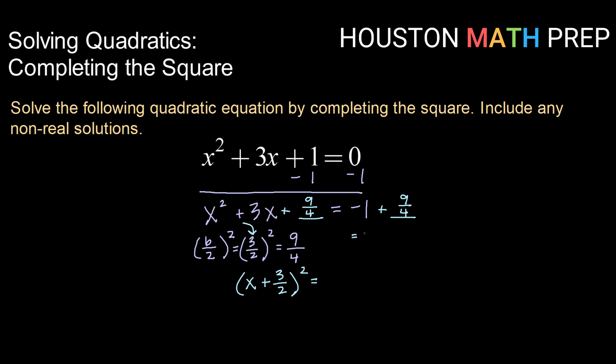And on the left hand side we want to combine. So if I get a common denominator there that would be negative 4 over 4 plus 9 over 4 to get 5 over 4.